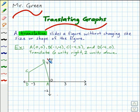For example, suppose we want to translate this quadrilateral ABCD six units to the right and two units down. If we did that, here is where the figure would end up.